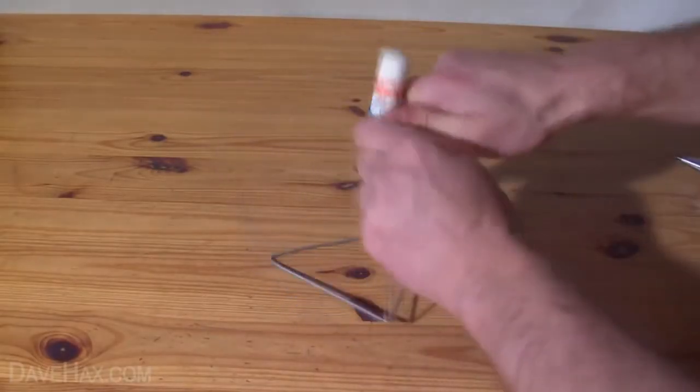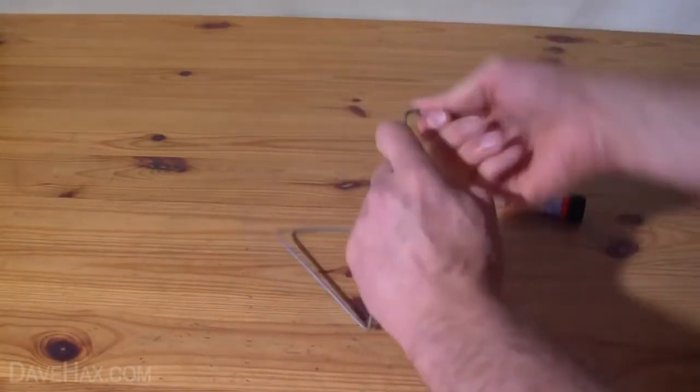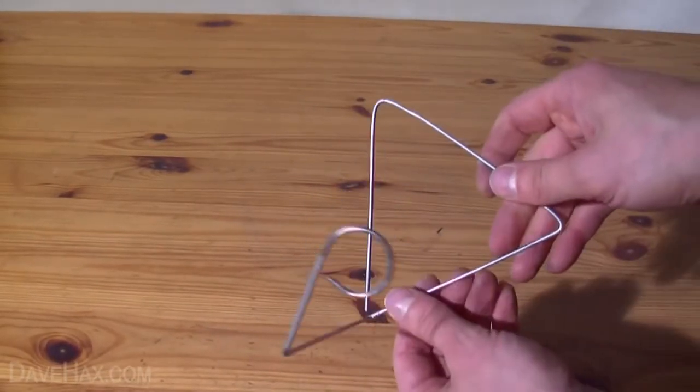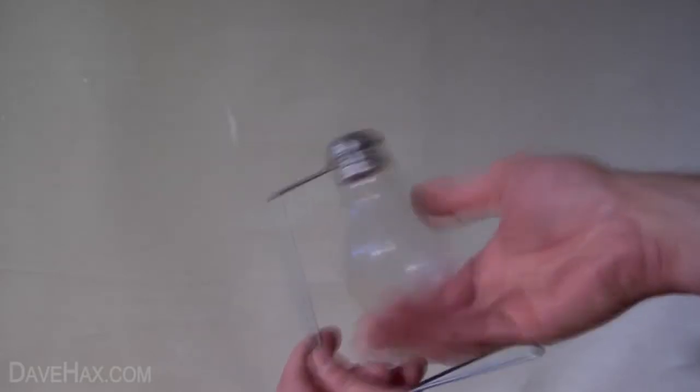Next we're going to curl the end of the support bar by either using your pliers or by wrapping the bar around something until it's the right size for the bulb to screw into. This needs to be a good snug fit as we don't want the bulb to fall out.